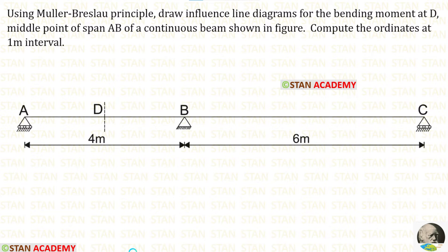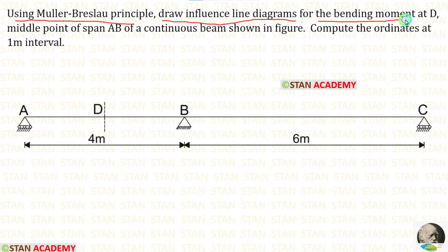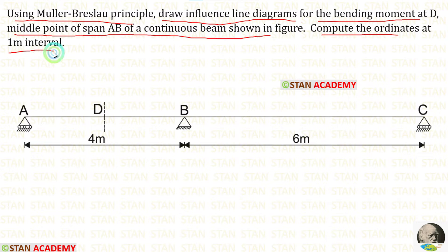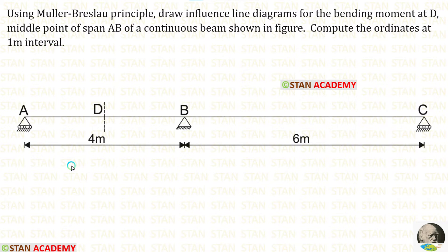Hello everyone, today let us do a problem based on influence line diagram. Let us read the question: Using Muller-Breslau principle, draw influence line diagrams for the bending moment at D, the middle point of span AB of a continuous beam shown in the figure. Compute the ordinates at 1 meter interval. In this continuous beam, we have been asked to draw the ILD for bending moment at D in the middle of the span AB.